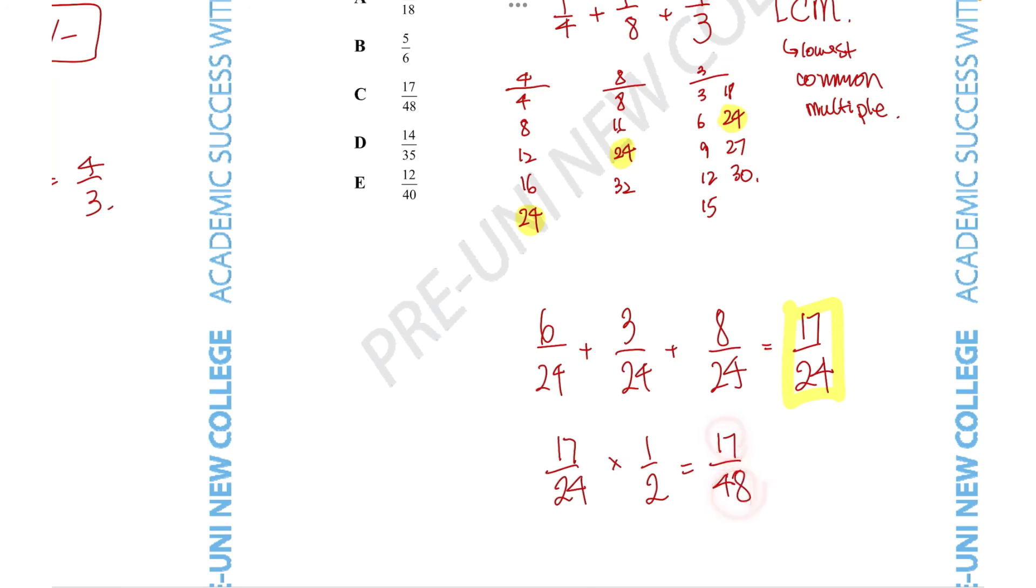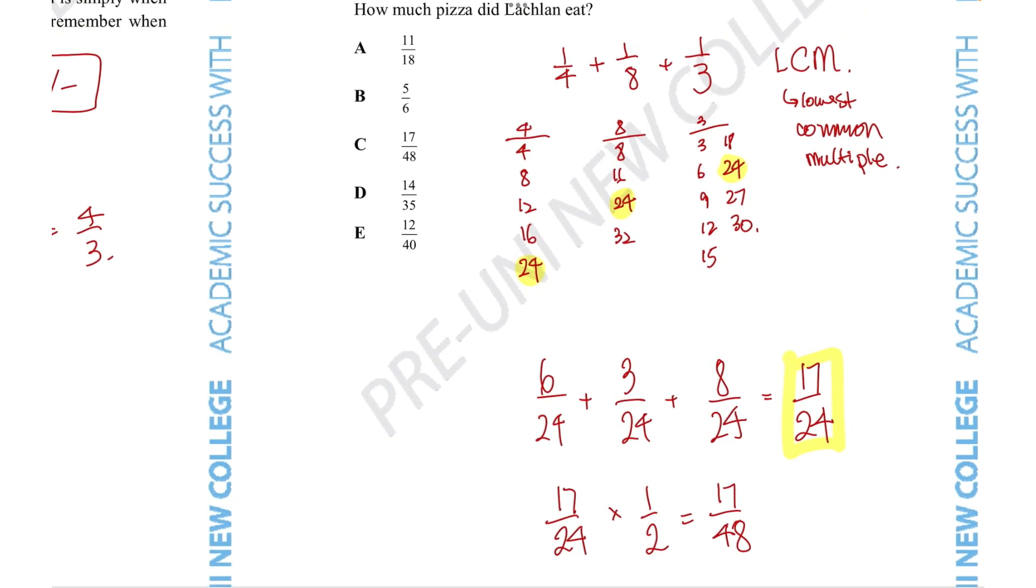Now since both of these numbers are not even numbers and they're not divisible by each other, this is the most simplified form which means that all we need to do now is figure out which answer option it is. It has got to be option C.